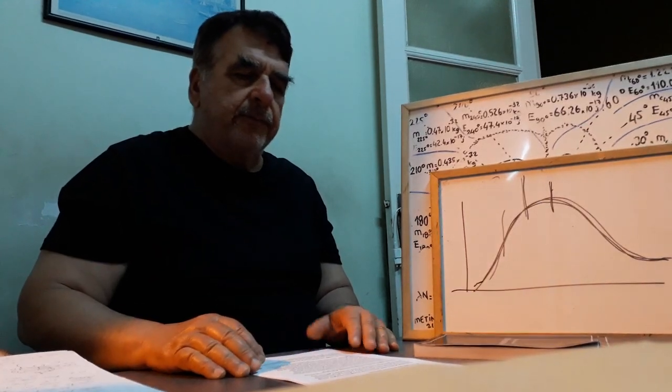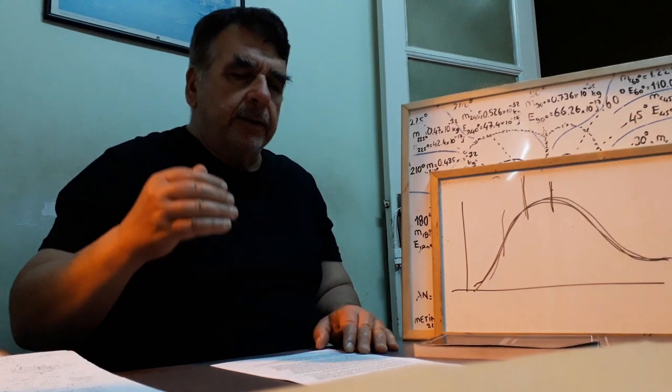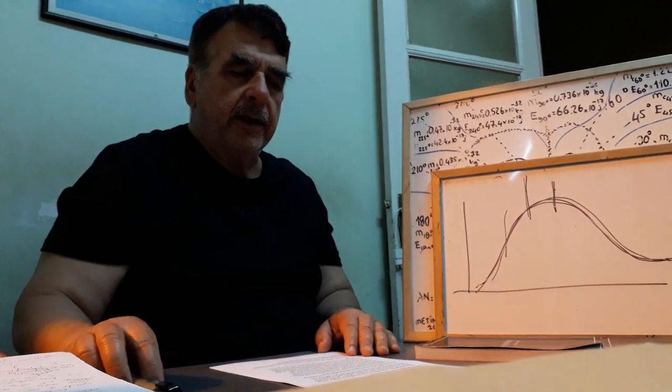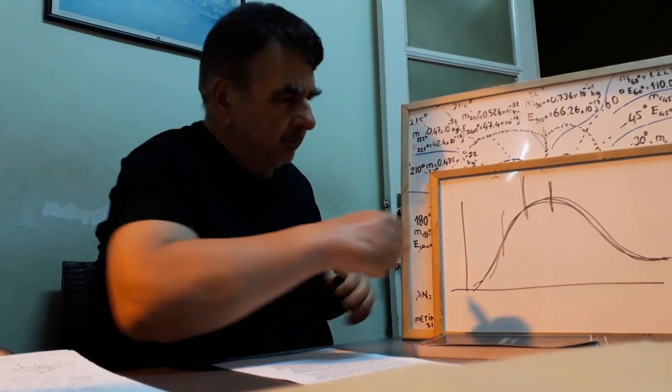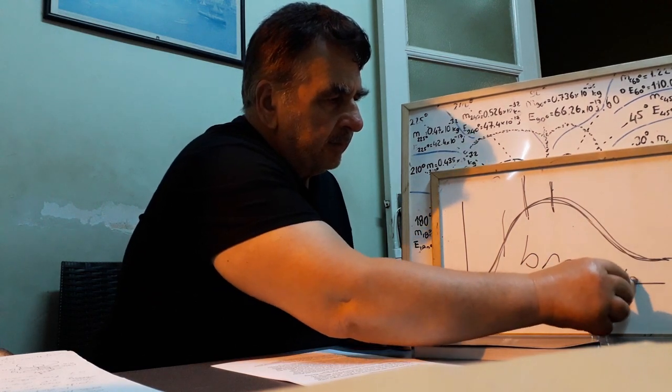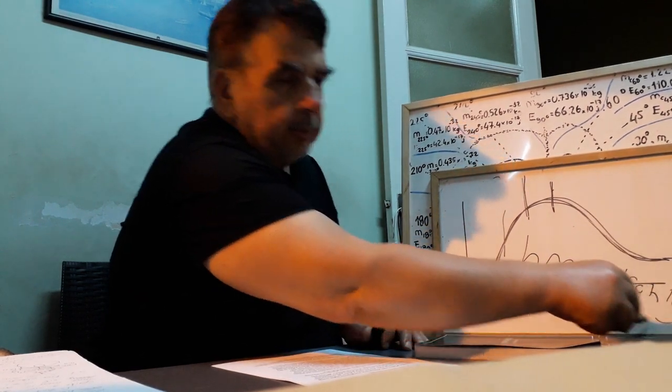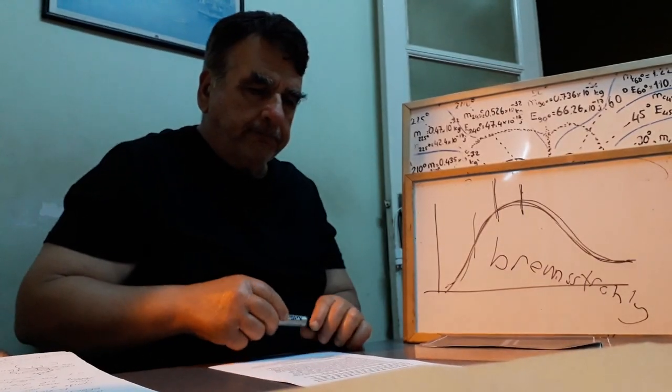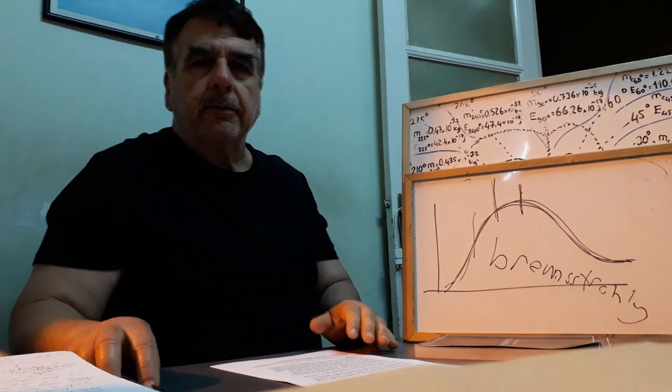Accepted physics defined continuous spectrum-generating mechanism as Bremsstrahlung. In different way.